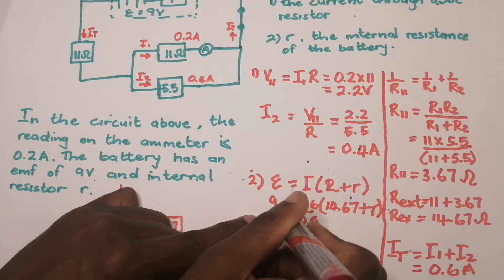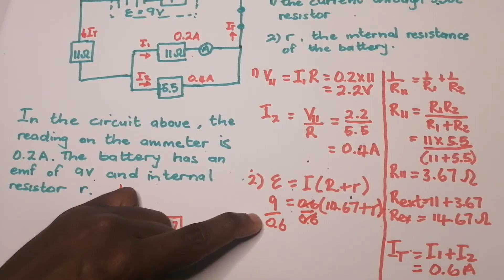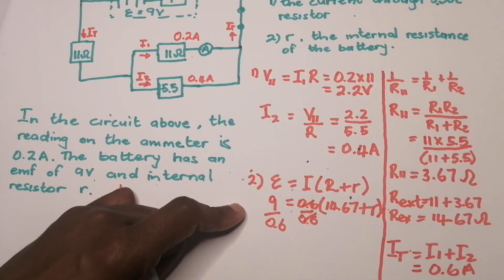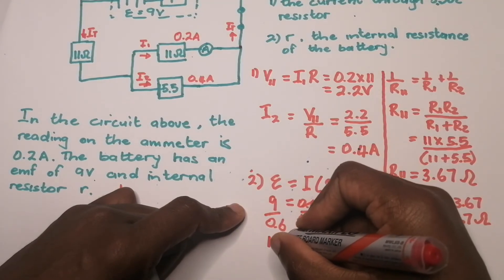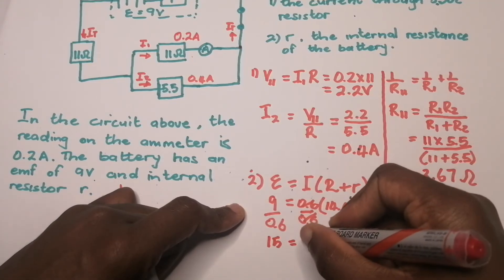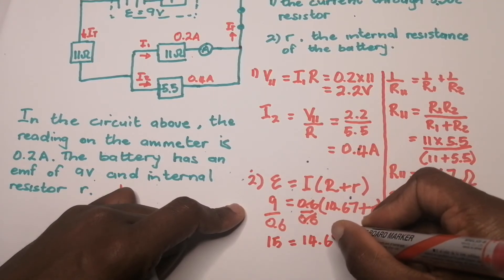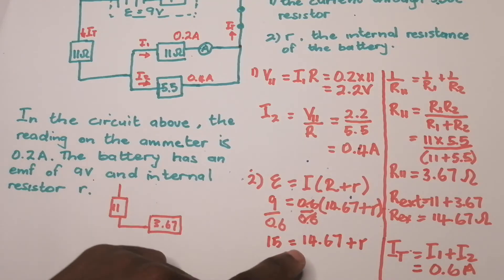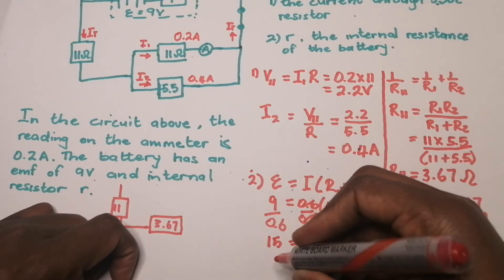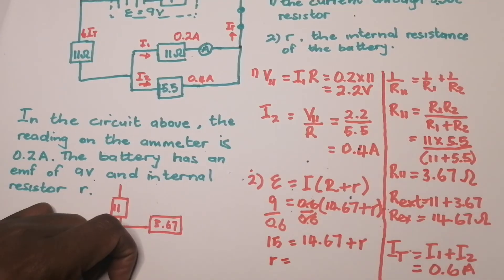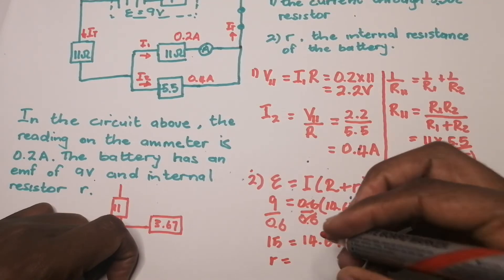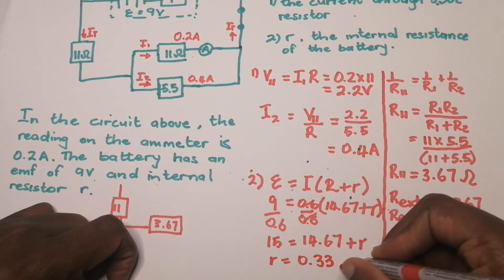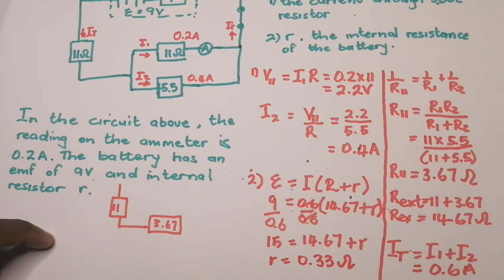So r = 15 − 14.67 = 0.33 ohms. That is the internal resistance of the battery. That's how we solve that part of the problem.